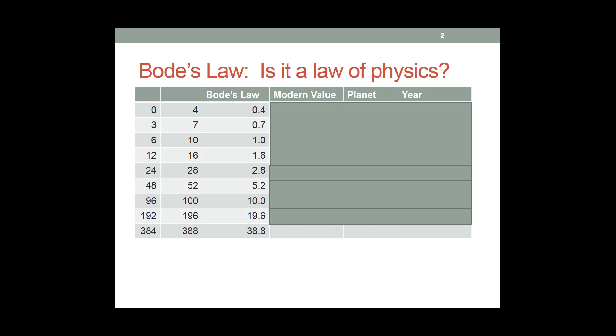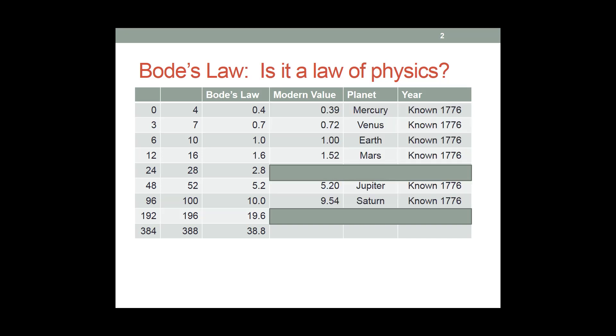When Bode's Law was popularized, several planets were known. So in 1776, we knew the locations of Mercury, Venus, Earth, Mars, Jupiter, and Saturn.